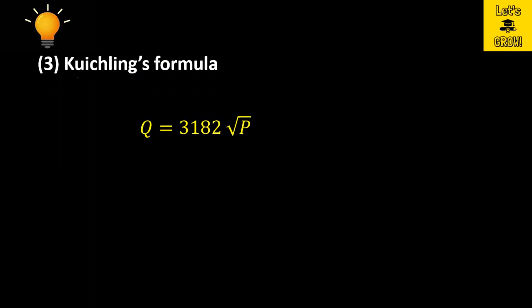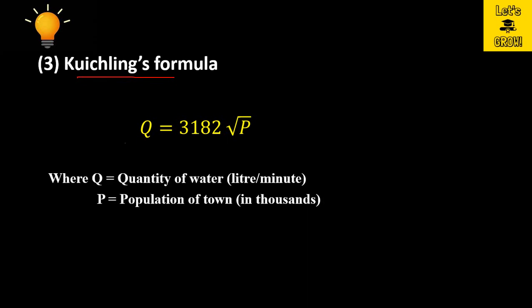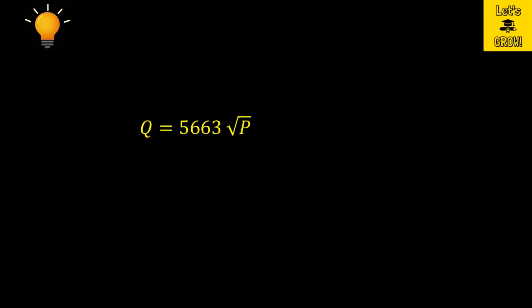The third formula is given by Kuichling, and that is why it is known as Kuichling's formula. Here Q is the quantity of water in liter per minute and P is the population in thousands.